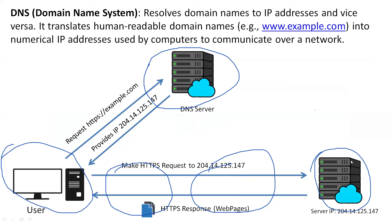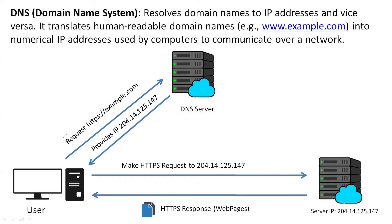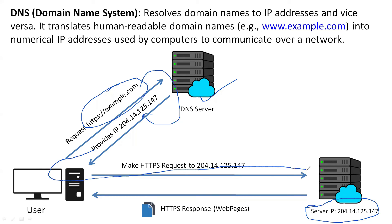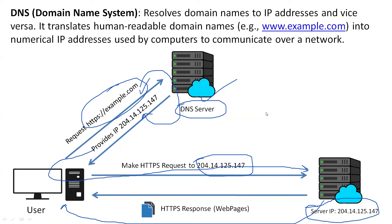The next protocol is DNS — Domain Name System. All servers over the internet have a specific IP address. When you type a domain name in your browser, like https://example.com, the DNS server converts that domain name into an IP address. Your browser then sends a request to the nearest server with that IP address, and in response, the web page is returned. So DNS is used to map domain names to their corresponding IP addresses.